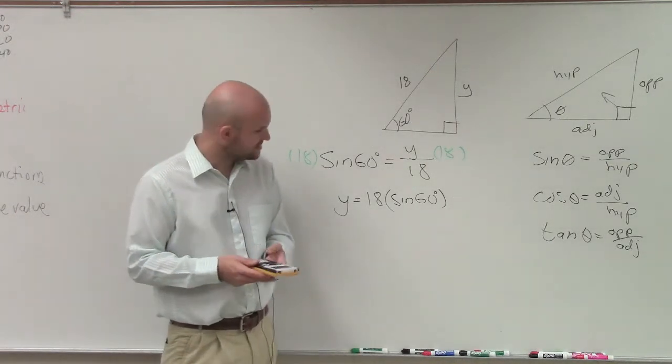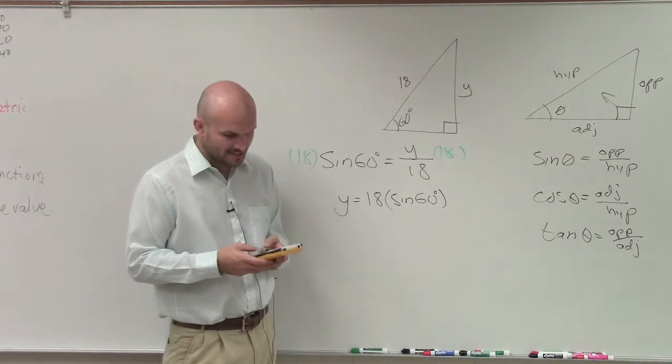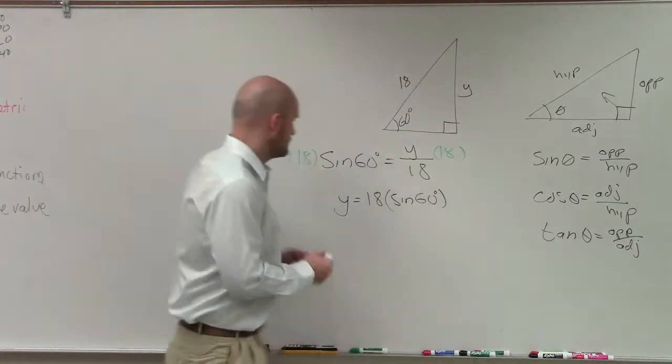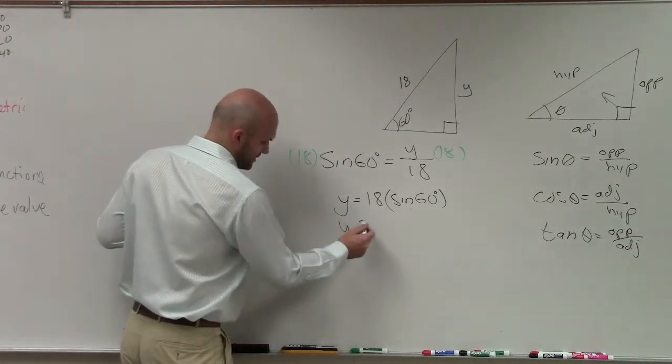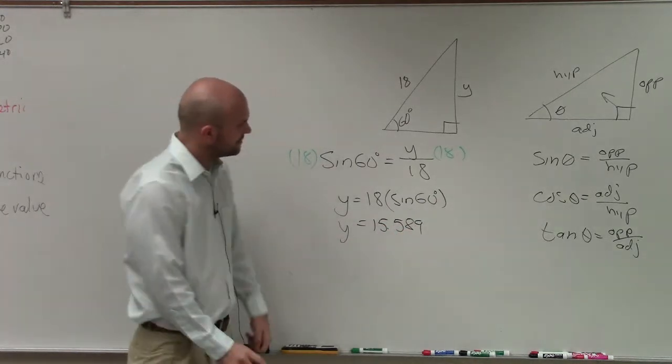In my mode, I'll make sure I'm in degrees, then simply do 18 times sine of 60. That's 15.58, or 15.589 rounded to the thousandths.